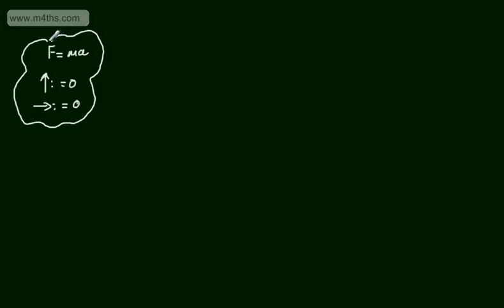If we now look at the word static, a body is said to be static if there's no movement. Now, there is a difference between the two. With equilibrium, we can have an object — let's take a particle — that is moving, but it's still in equilibrium. So if we had a particle that had a constant speed of 16 meters per second, there's no acceleration, so whilst it's still moving, it's in equilibrium.